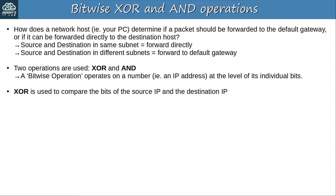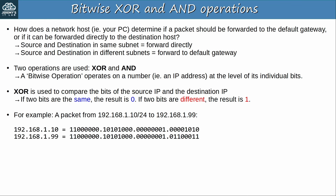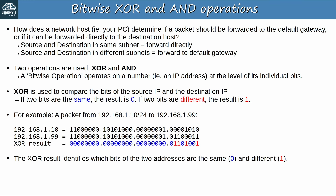First up is XOR, which is used to compare the bits of the source IP and destination IP. If two bits are the same, the result of the operation will be 0. If two bits are different, the result of the operation will be 1. So let's look at an example. Host 192.168.1.10 with a /24 prefix length is sending a packet to 192.168.1.99. Here are the source and destination IPs in binary. Using the XOR operator to compare them, the XOR result identifies which bits of the two addresses are the same with a 0, and which bits are different with a 1.